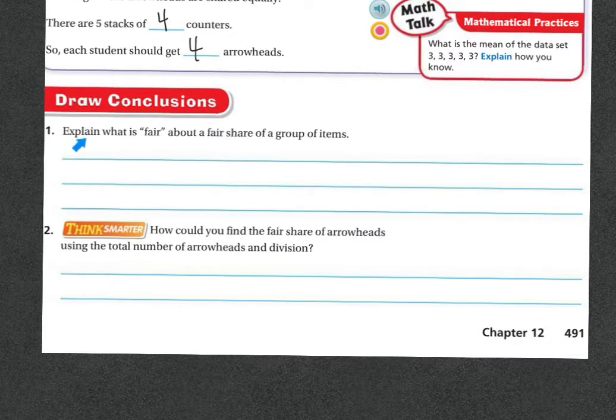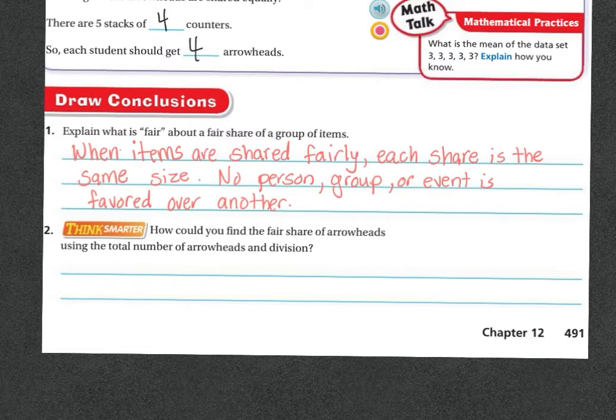Number one. Explain what is fair about a fair share of a group of items. So when items are shared fairly, each share is the same size and no person, group, or event is favored over the other.